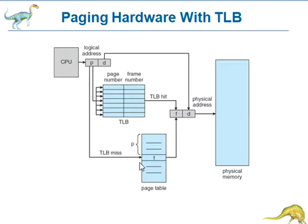See the diagram here. This is the TLB — the CPU is generating the logical address. The TLB contains only a few of the page table entries. When a logical address is generated by the CPU, its page number is presented to the TLB.